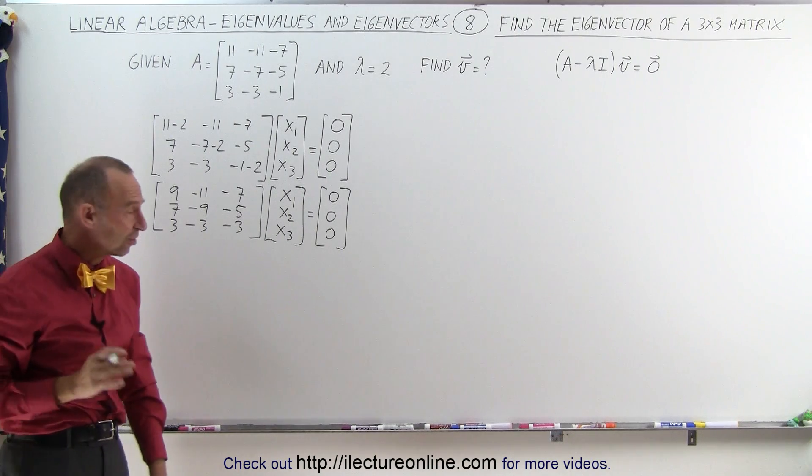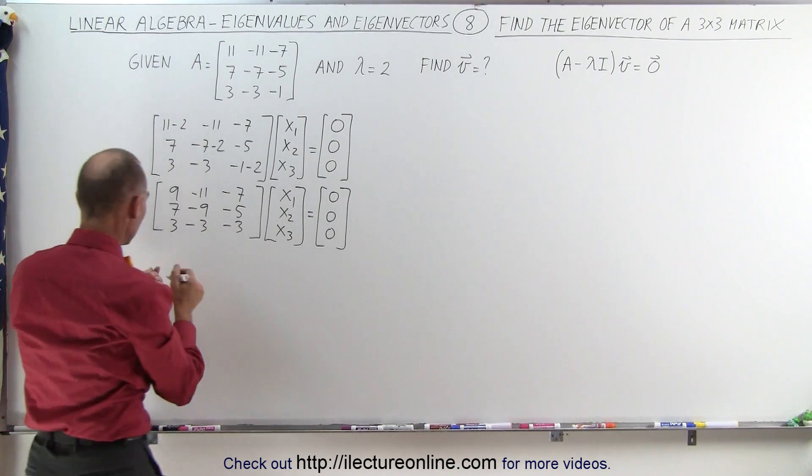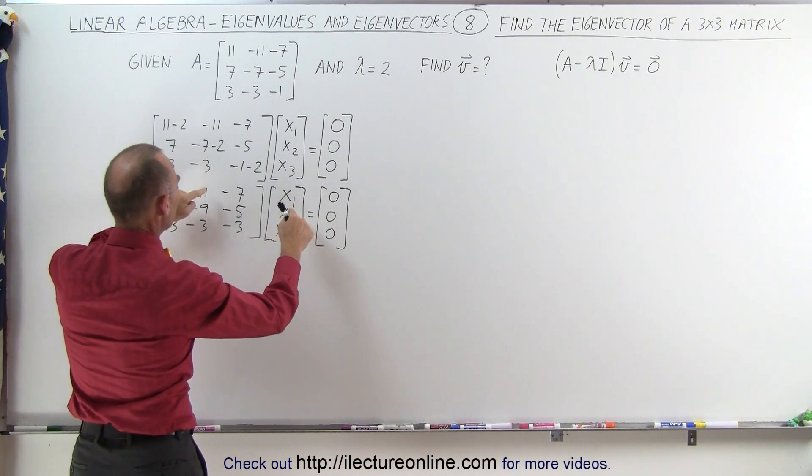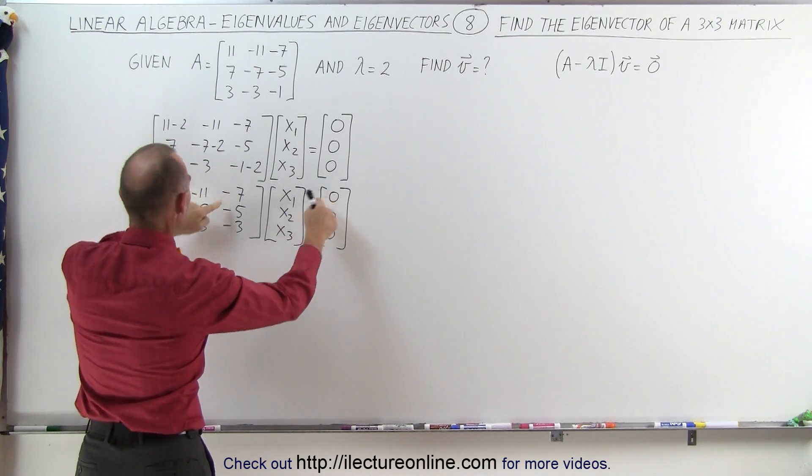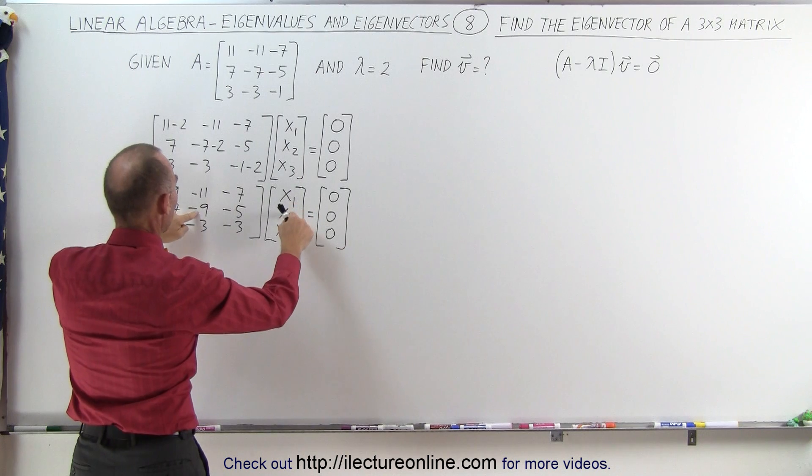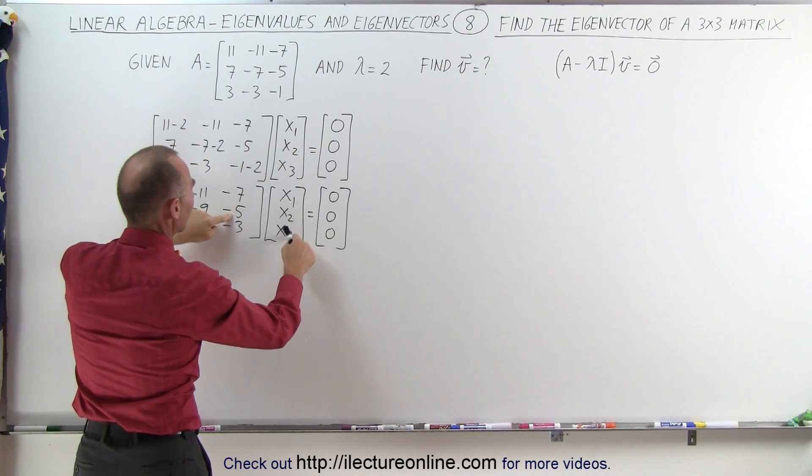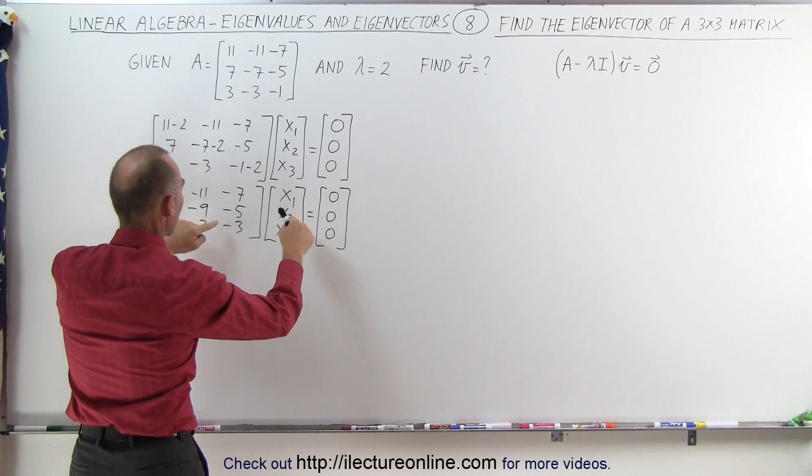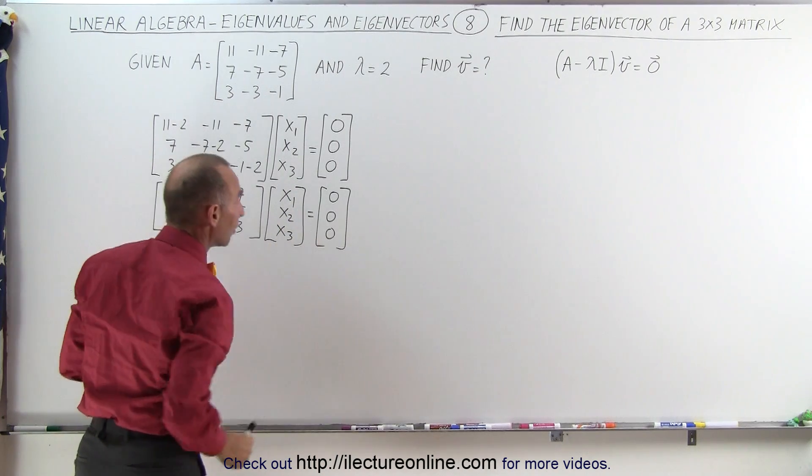Now we have like a system of linear equations. Notice here we have 9 times X1 minus 11 X2 minus 7 X3 equals 0. We have 7 X1 minus 9 X2 minus 5 X3 equals 0 and 3 X1 minus 3 X2 minus 3 X3 equals 0.